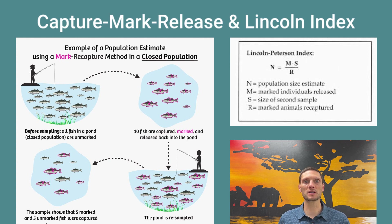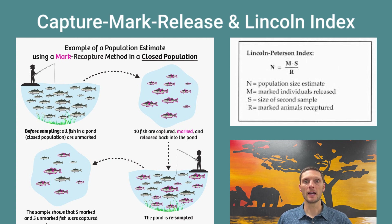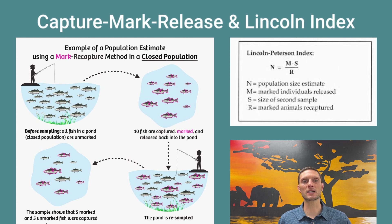There are a few assumptions with this process: there is no migration into or out of the population, there are no deaths or births during the sampling period, marked individuals have an equal chance of being recaptured, the marks remain visible and don't disappear, and the marks do not increase predation risk or survival threats. So capture, mark, release, and use of the Lincoln Index works well for mobile organisms.